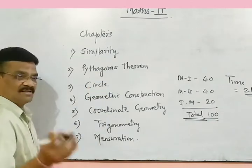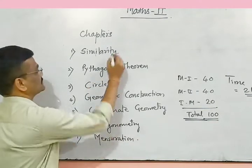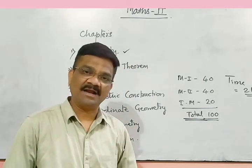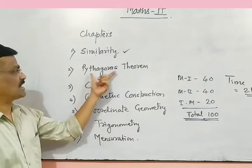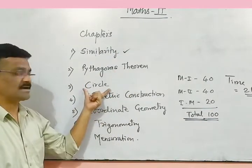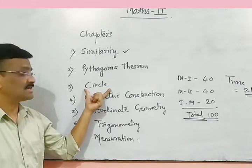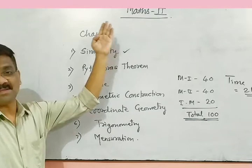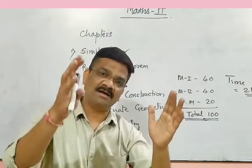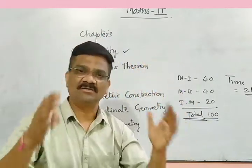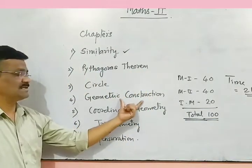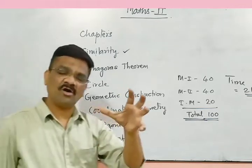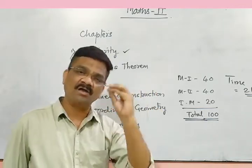Out of these 7 chapters, you have prior knowledge of Mensuration. First of all we will talk about Similarity — you gained some knowledge of it in 9th class. Pythagoras Theorem and Circle you have also studied in 9th class. Maths 2 deals with figures, numbers, construction, and diagrams. Geometric Construction covers marks, figures, how to draw a circle, triangles, and all these things.